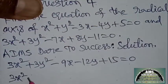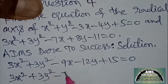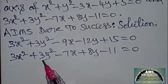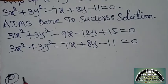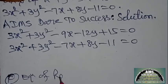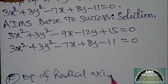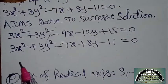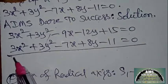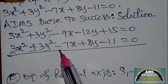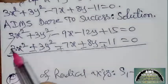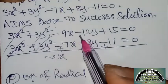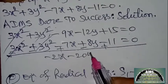Second circle you can write as it is: 3x² + 3y² − 7x + 8y − 11 = 0. Formula: equation of radical axis, while x² and y² coefficients are same, use S1 − S2 = 0. Subtraction: 3x² cancels, 3y² cancels. −7x − (−9x) = 2x... wait: −9x minus −7x gives −2x; −12y minus 8y = −20y.